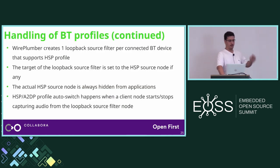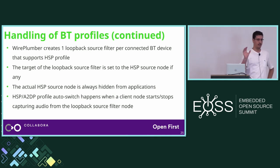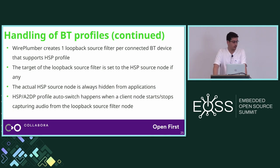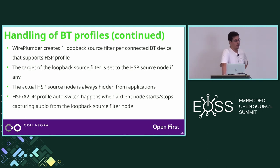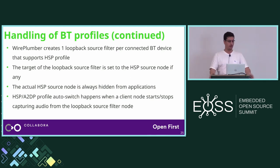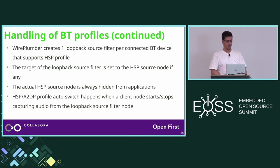The logic works like this: WirePlumber creates one loopback source filter per connected Bluetooth device that supports HSP profile, and that source filter has the same name as the HSP source node of the Bluetooth profile. It's there to let applications know that there is a node that can output buffers. The target of this loopback filter is set to the real HSP source node of the device, if any — because if the device is set to A2DP, there's no HSP source node. The actual HSP source node is always hidden from applications so they don't see two source nodes. HSP and A2DP profile auto-switching happens when a client node starts and stops capturing audio from the loopback source filter node.